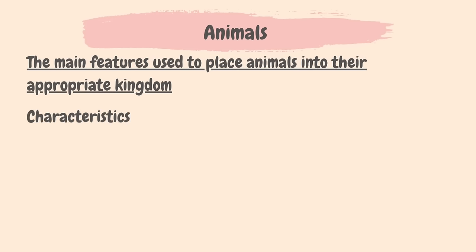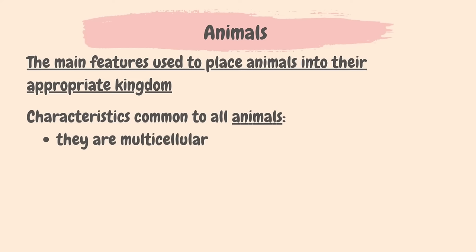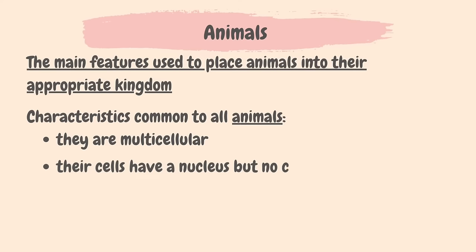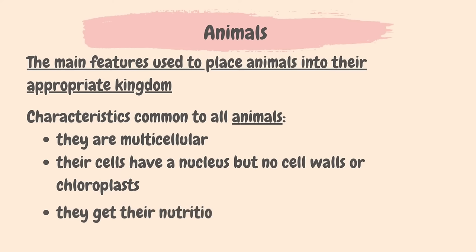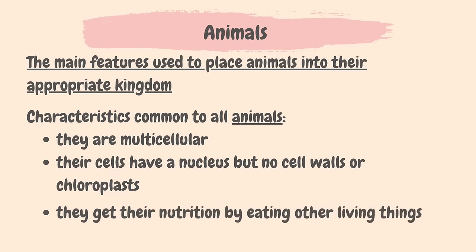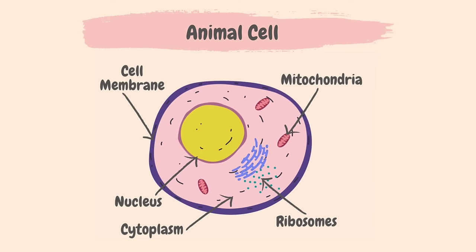Let's take a look at animals first. The main features of all animals are: they are multicellular, or made of many cells; their cells contain a nucleus but no cell walls or chloroplasts; and they get their nutrition by eating other living things. Here's a picture of an animal cell — they have a nucleus, cell membrane, mitochondria, ribosomes and cytoplasm.